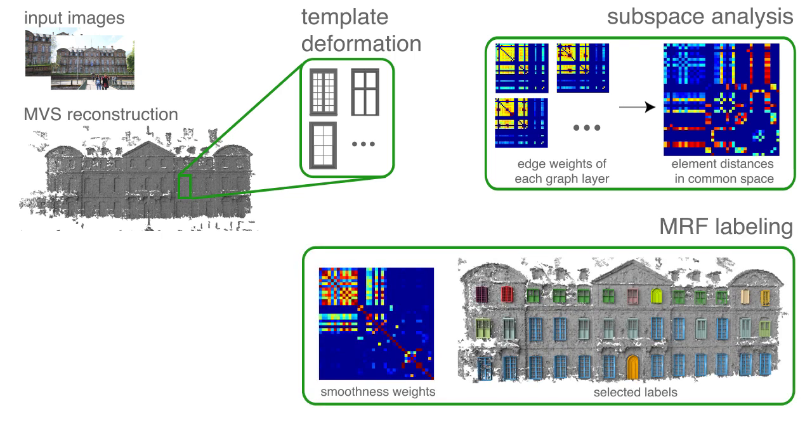Using the pairwise element distances in this subspace as constraints, we label each element with a deformed template instance.